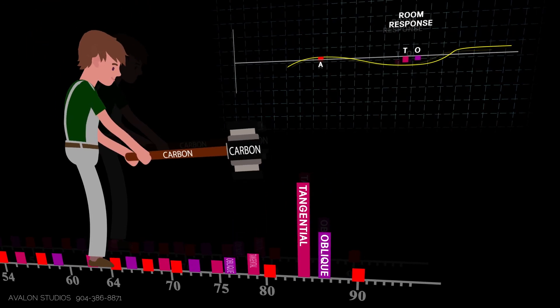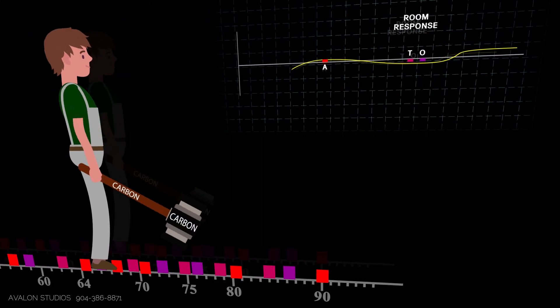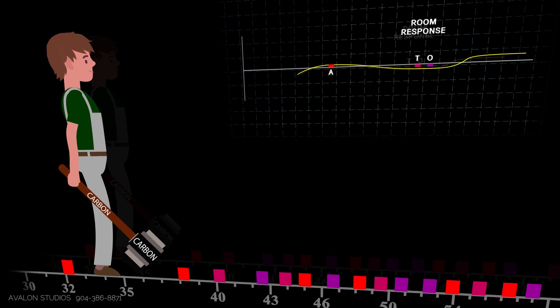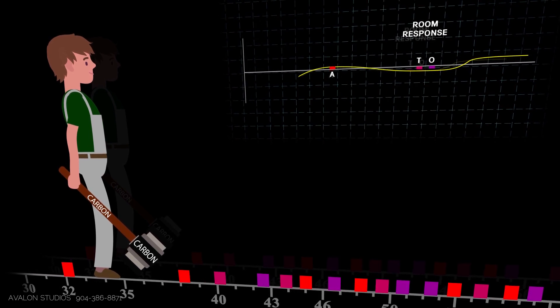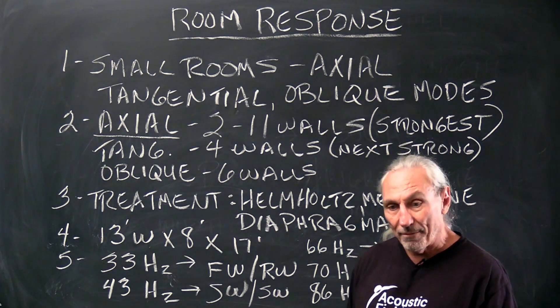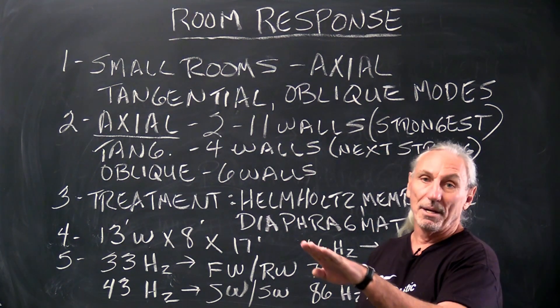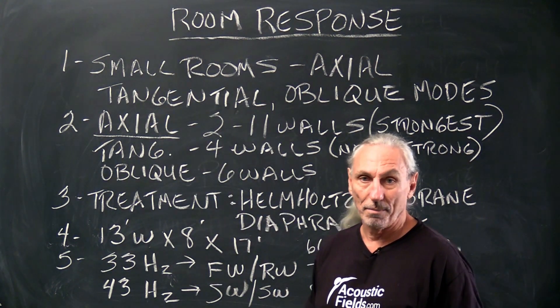And that's just the standard response curve in small rooms unless we have really long dimensions, 30, 40 feet. And who has that today? Nobody. So we're always going to have this peak and these dips. The axial modes are causing the peak.